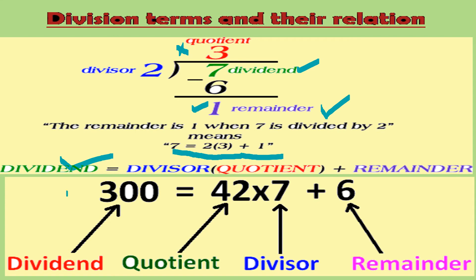Here is another example: dividend is 300, divisor is 7, and quotient is 42. If you add the remainder you will get back the dividend. The formula to check division problems is: dividend = (divisor × quotient) + remainder.